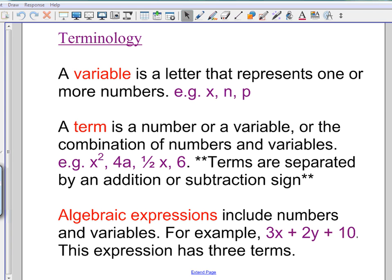The next thing that you have to remember is a term. So in algebra, a term is a number or a variable, or sometimes a combination of numbers and variables put together. So these are some examples: x squared, 4a, 1 half x, 6. The really important thing about terms is to know that terms are separated by an addition or subtraction sign.